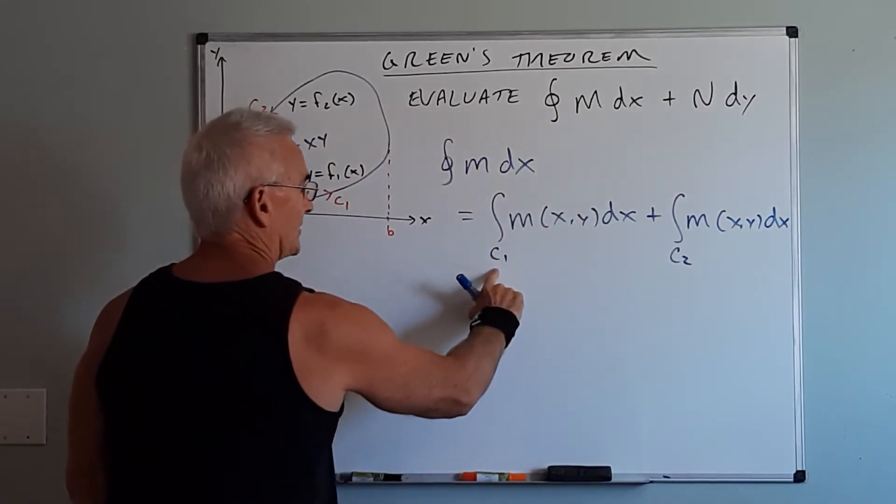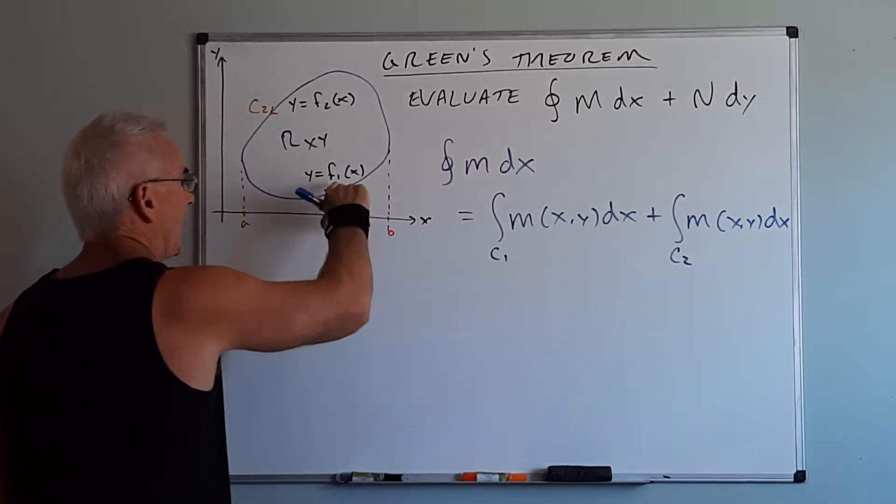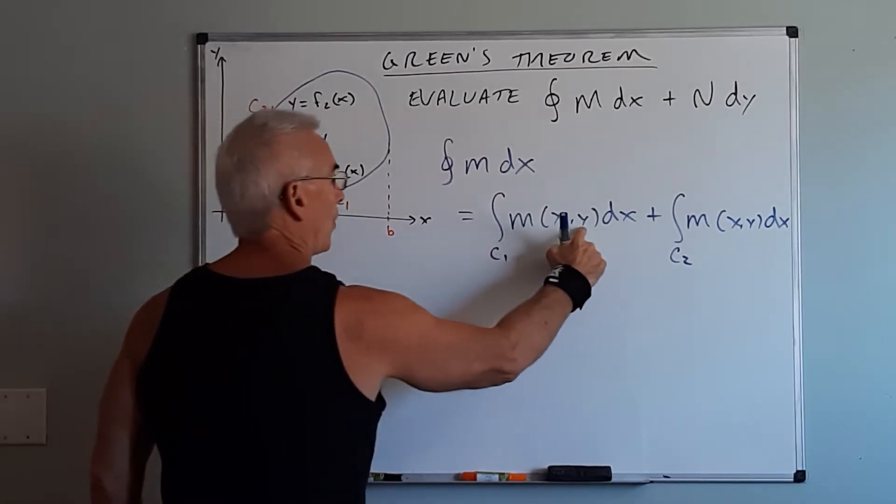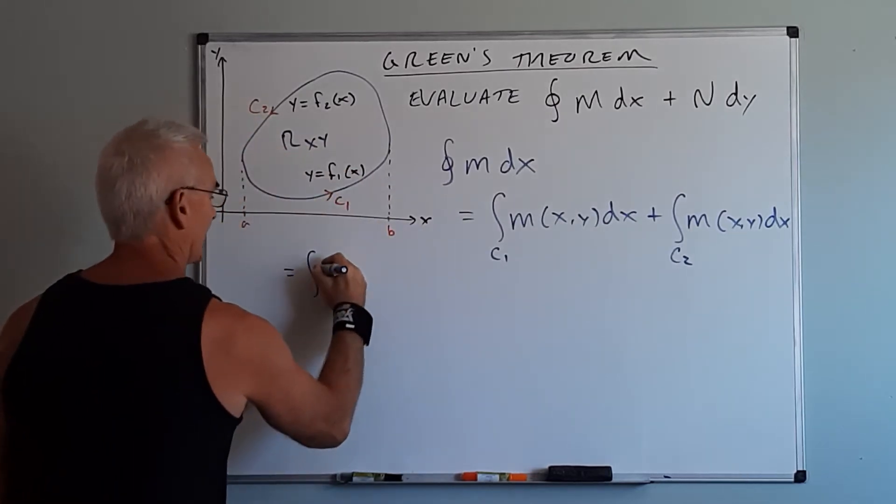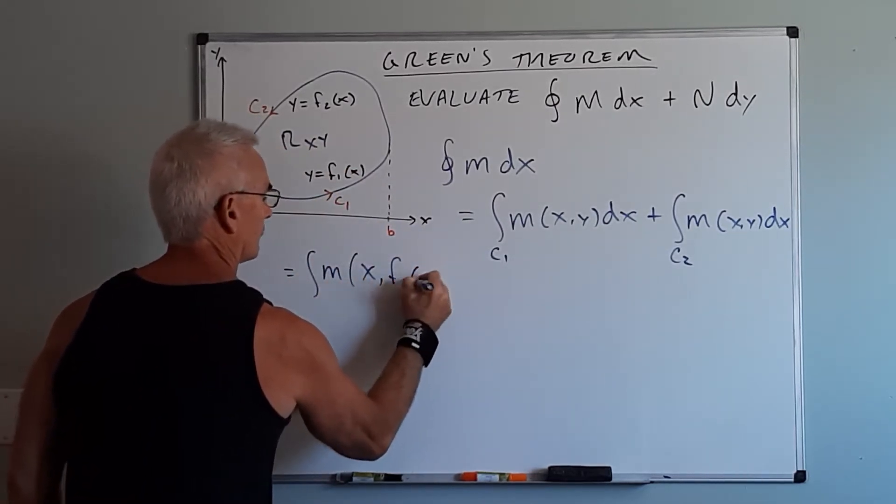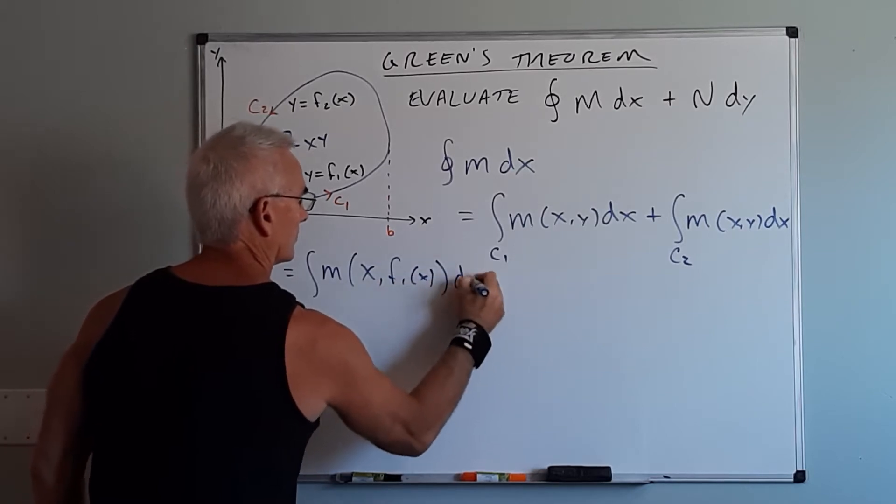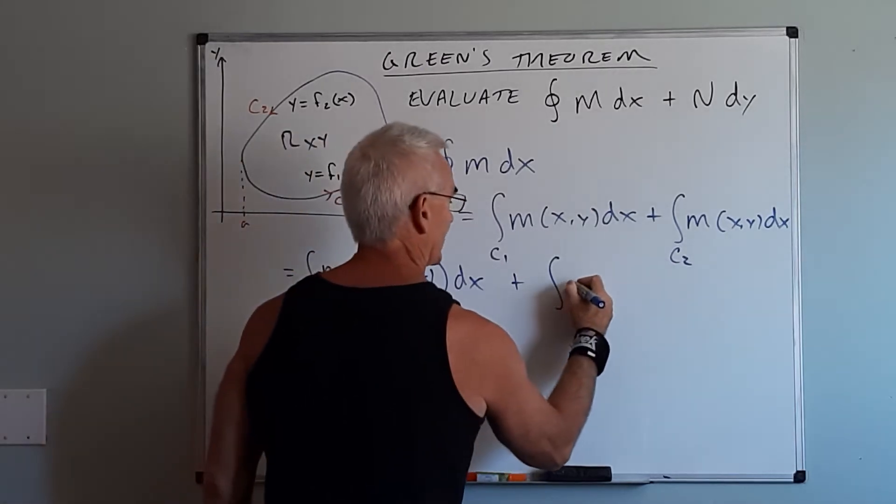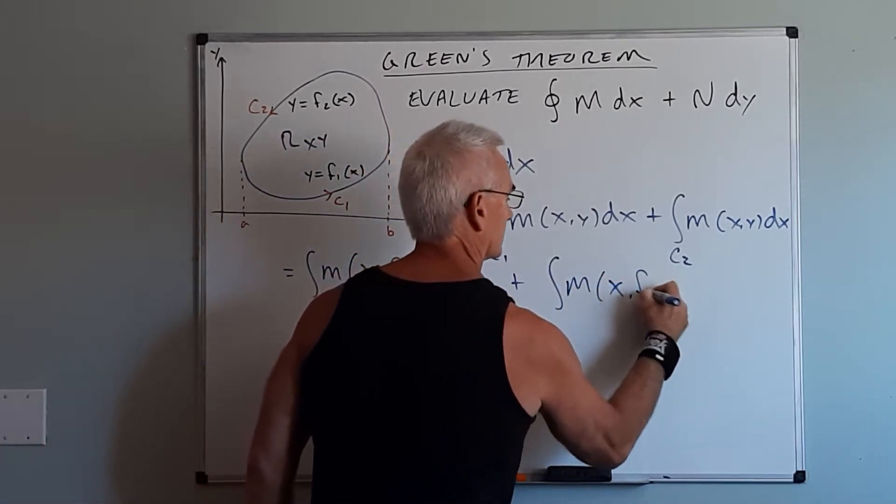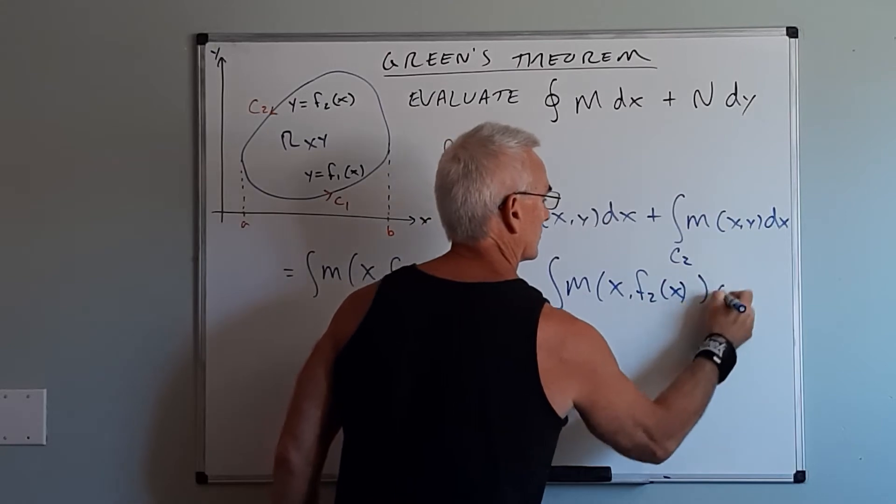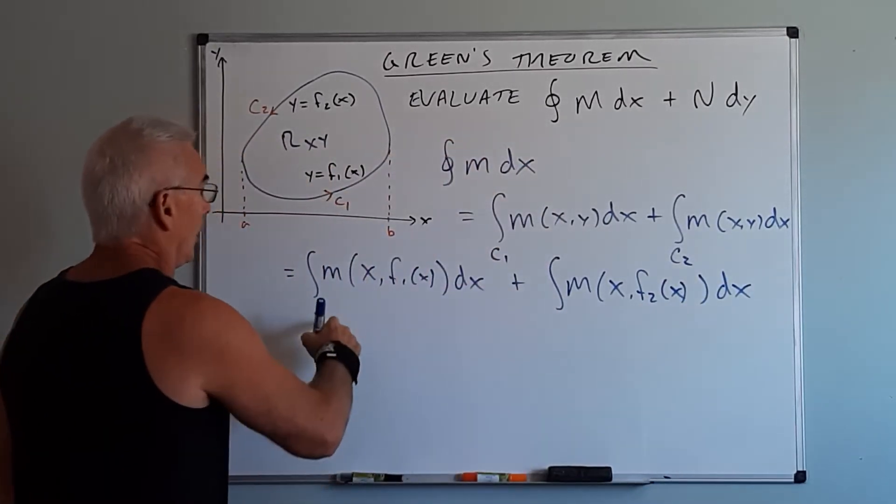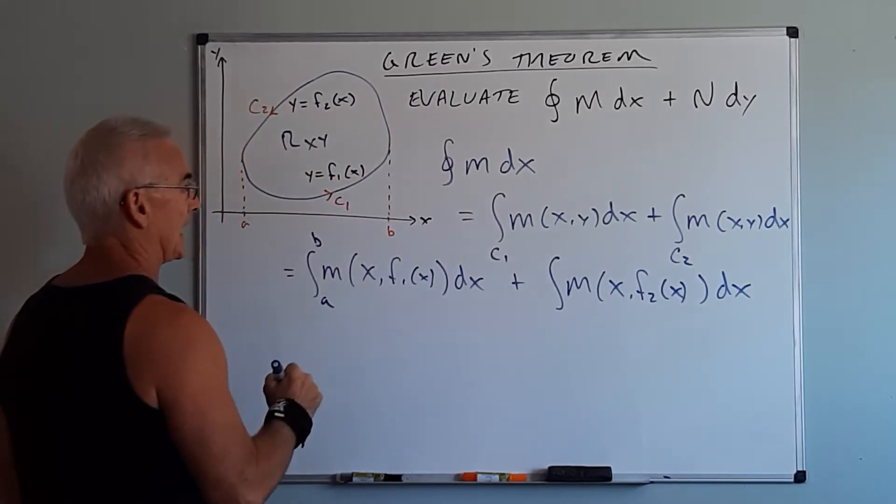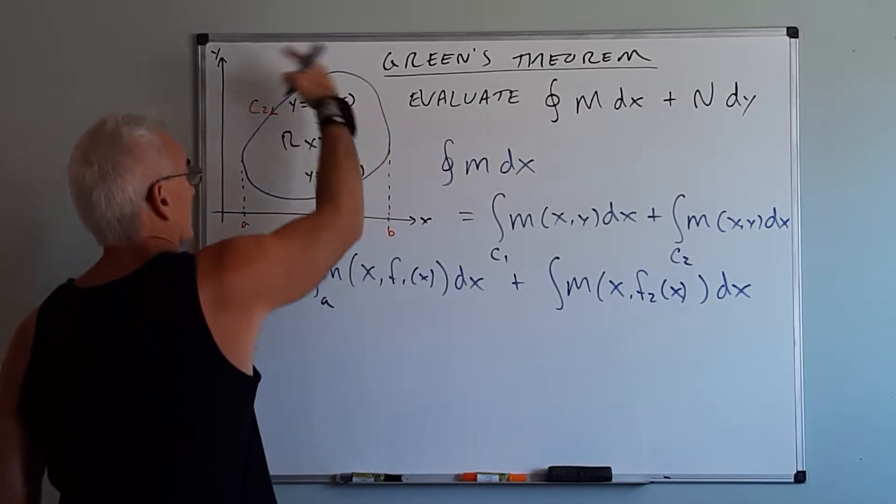So now we're going to substitute on C1, y equals f1 of x. So what I'm going to do is replace y with f1 of x and then C2 I will replace y with f2 of x. Now the limits of integration on C1 I will be going from a to b and on C2 I will be going from b to a.